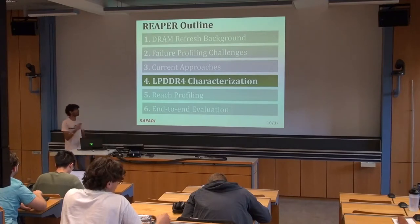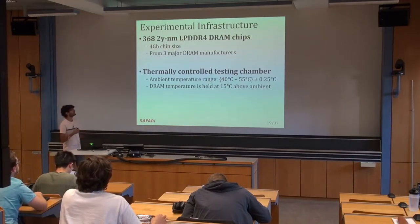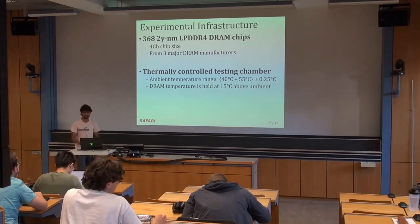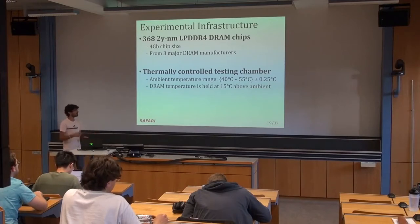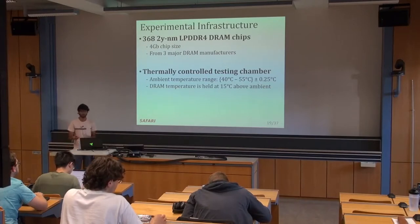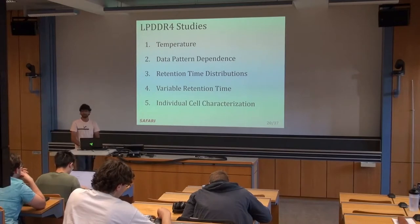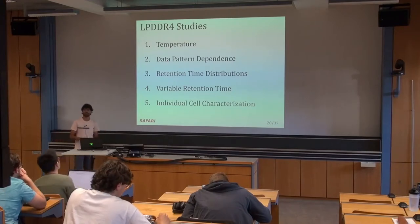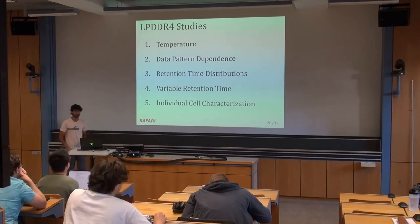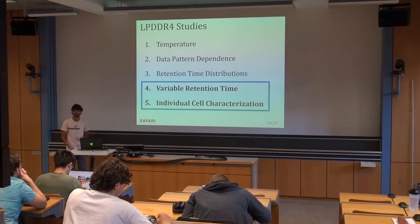Now I'm going to talk about some of the characterization studies we did. We developed a testing infrastructure capable of testing a whole bunch of LPDDR4 DRAM devices. Each chip is four gigabits in size, and we have chips from across three major DRAM manufacturers. To control temperature variation, we do all testing in a thermally controlled chamber with a tolerance of 0.25 degrees Celsius. We also have a localized heating source to maintain DRAM temperature at 15°C above ambient. We do a whole bunch of studies — temperature, data pattern dependence, and retention time distributions show results similar to prior DDR3 work, so in this talk we focus on variable retention time and individual cell characterization.